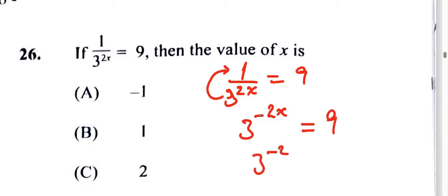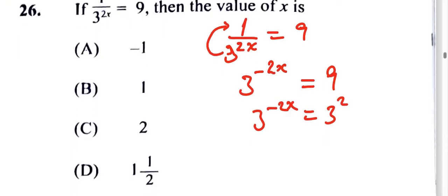Then, this is what we could do. Write 9 as 3 squared, right? Because 9 is actually equal to 3 squared. Then, once the bases are the same, then the powers are the same too.